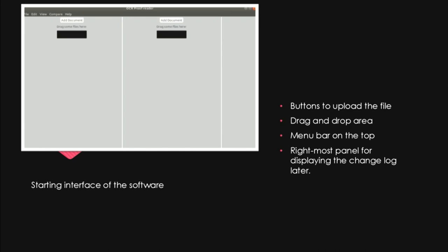The starting interface of our application looks like this. We have buttons to upload the file and a drag-and-drop area. There is a menu bar on the top with File, Edit, View, Compare, and Help. There are submenus with many functionalities we want to implement in future versions of the software. The rightmost panel will be for displaying the change logs.